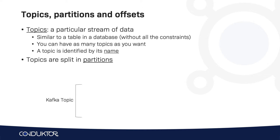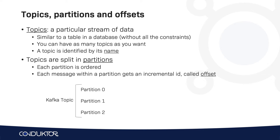A Kafka topic is a concept and topics are split into partitions. When you create a Kafka topic, as we'll see in the hands-on, we will have to specify how many partitions we want. Each partition is going to be a stream of data as well, and the data within each partition will be ordered. Each message within the partition will get an incremental ID, which is the position of the message in the partition, and that specific ID is called an offset.